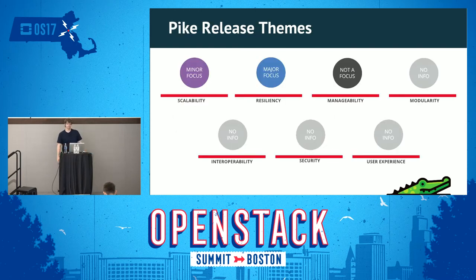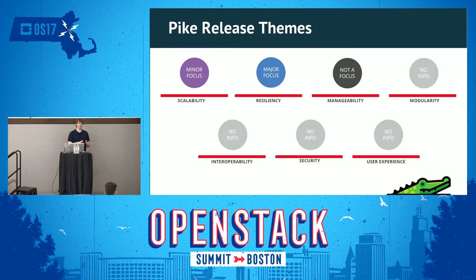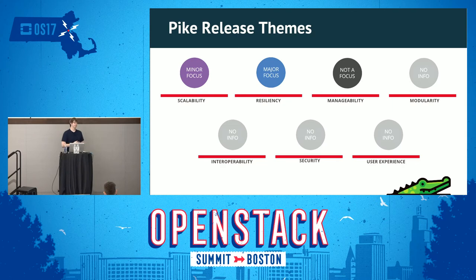A major focus for Pike is resiliency — that's the periodic sync feature, where if something goes wrong on the DNS backend, like your BIND server seg faults and deletes zones, Designate will fix that for you without manual intervention. Additionally, having the worker model — a re-architecture that makes Designate more scalable and simpler — finished and set as the default is a key focus that lends towards scalability.